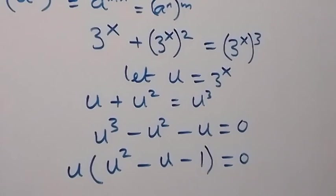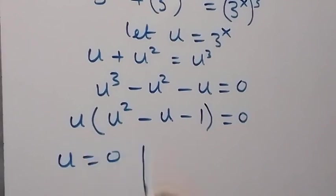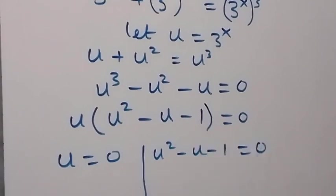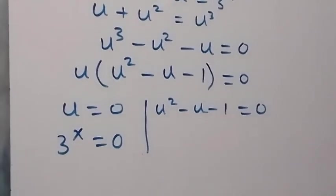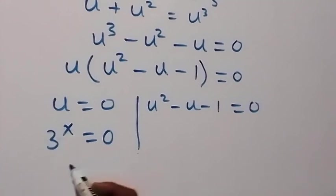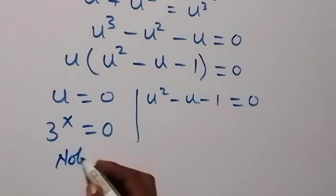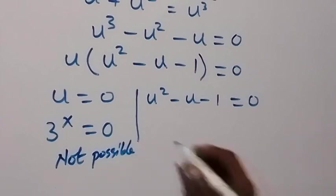We now have two possible cases: u equals zero, and u squared minus u minus 1 equals zero. Since u equals 3 raised to power x, and 3 raised to power x cannot equal zero, there is no solution from the first case.